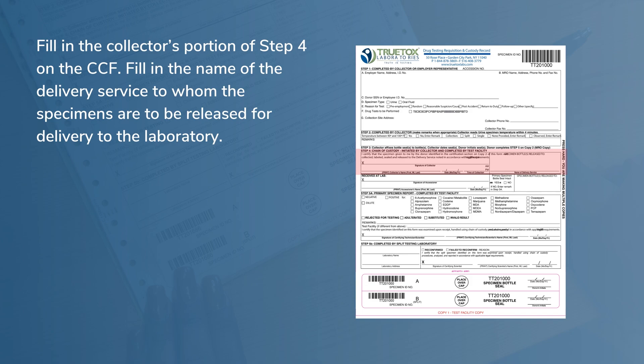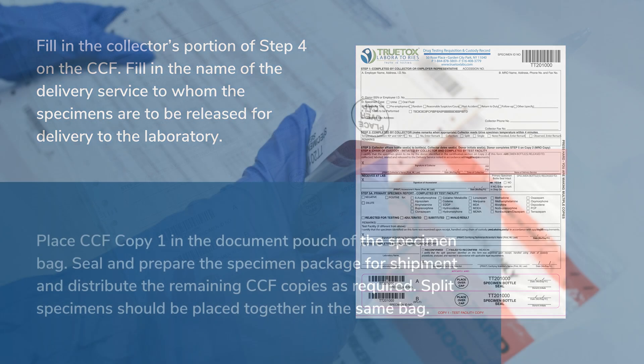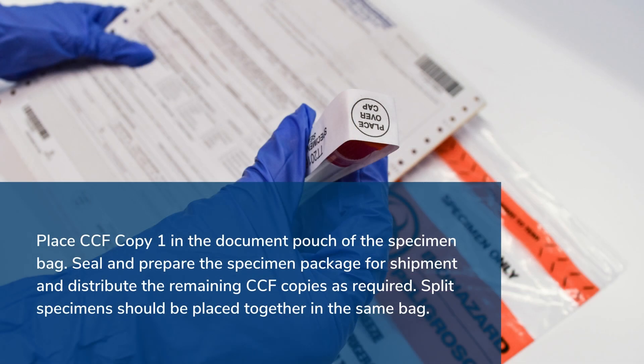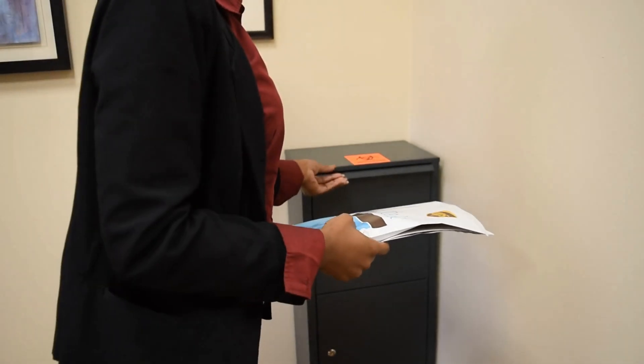Fill in the collector's portion of step 4 on the CCF. Fill in the name of the delivery service to whom the specimens are to be released for delivery to the laboratory. Finally, place CCF copy 1 in the document pouch of the specimen bag. Seal and prepare the specimen package for shipment and distribute the remaining CCF copies as required. Split specimens should be placed together in the same bag.